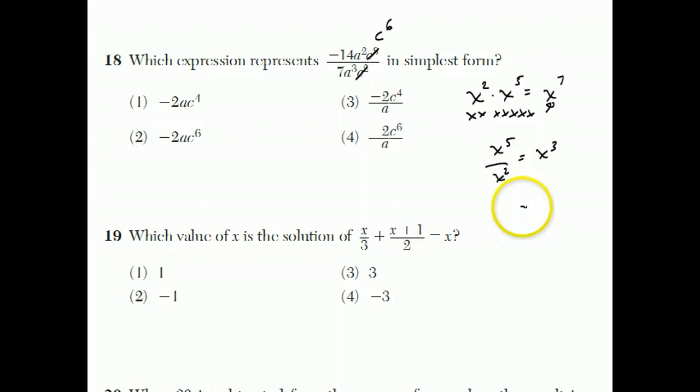Now, if the bigger exponent is on the bottom, like if I had x to the second over x to the fifth, you could subtract and get x to the negative three. Or you could do it the other way. Essentially, you're dividing top and bottom by x squared. So this would become one. And this would become x cubed. So you could think of it as you subtract the smaller number from the bigger one. And the smaller exponent sort of goes away. So in this case, a squared over a to the third, the a squared kind of goes away. And the a to the third becomes a to the first.